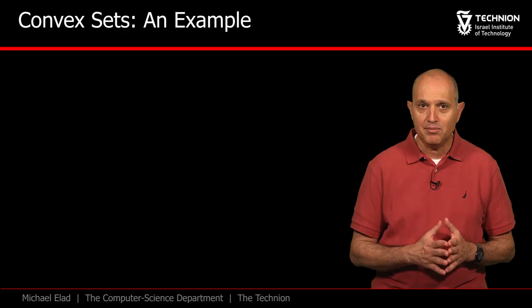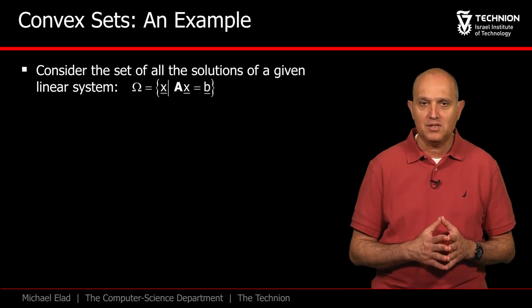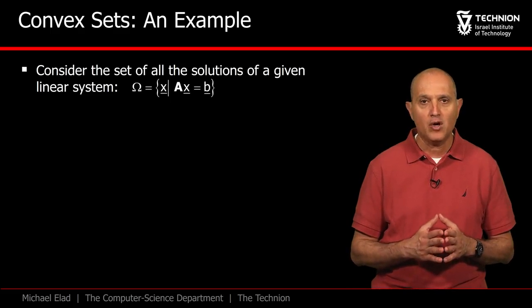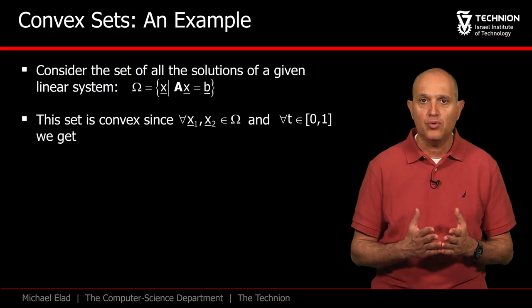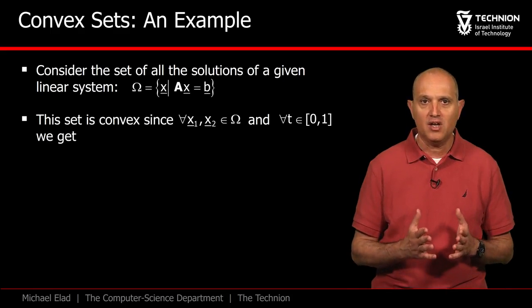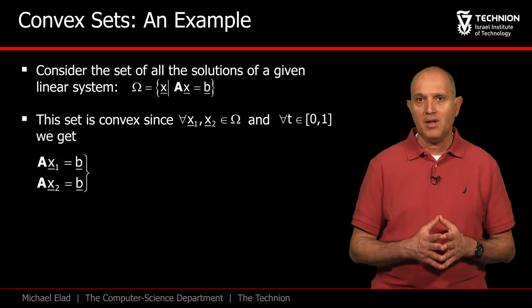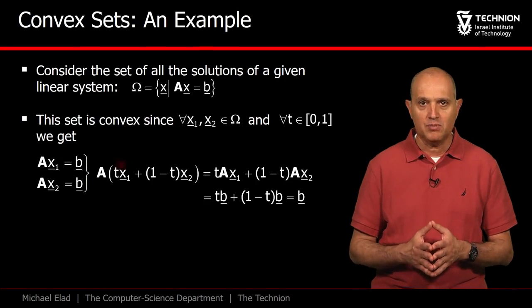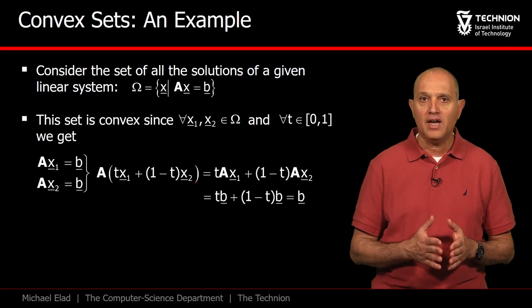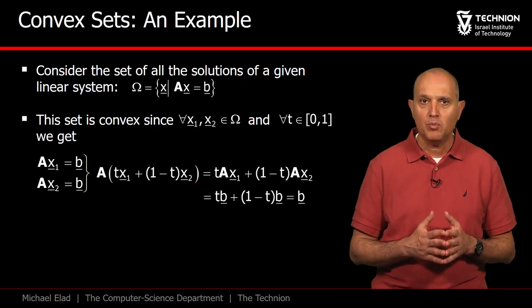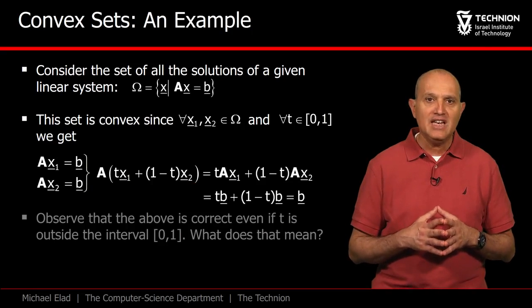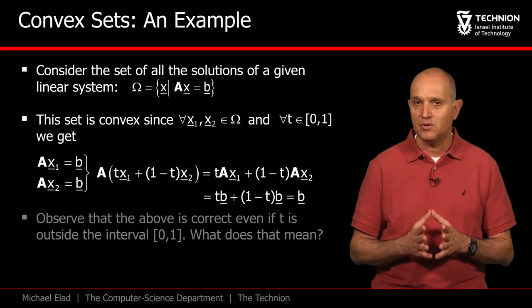As an interesting example, the set of all solutions to the linear system Ax equals b forms a convex set. In order to see this, define omega as this set and take any two points in it, x1 and x2. These two points must satisfy the equation Ax equals b. Multiplying the first of these equations by t and the second by 1 minus t and adding, we get that the whole line between x1 and x2 also belongs in omega. Notice that in this specific case, we do not even need to restrict the parameter t to the interval 0 to 1.